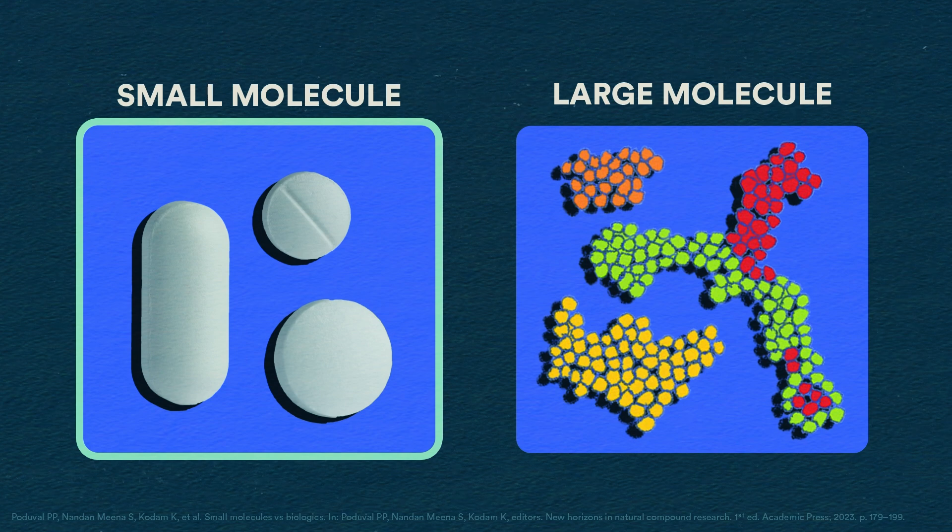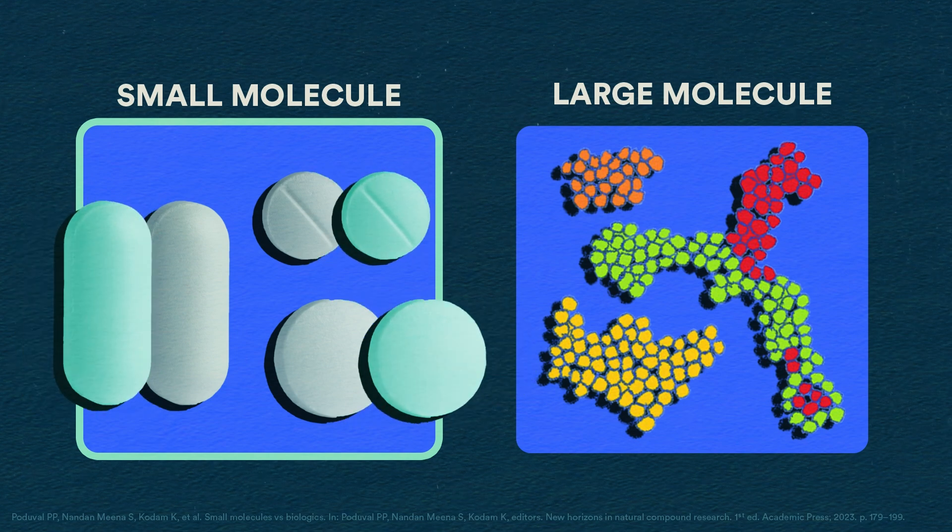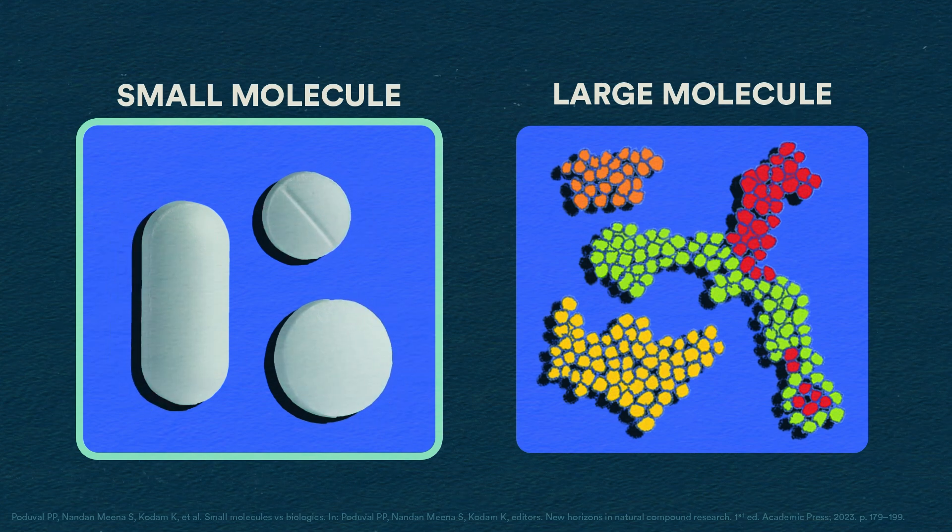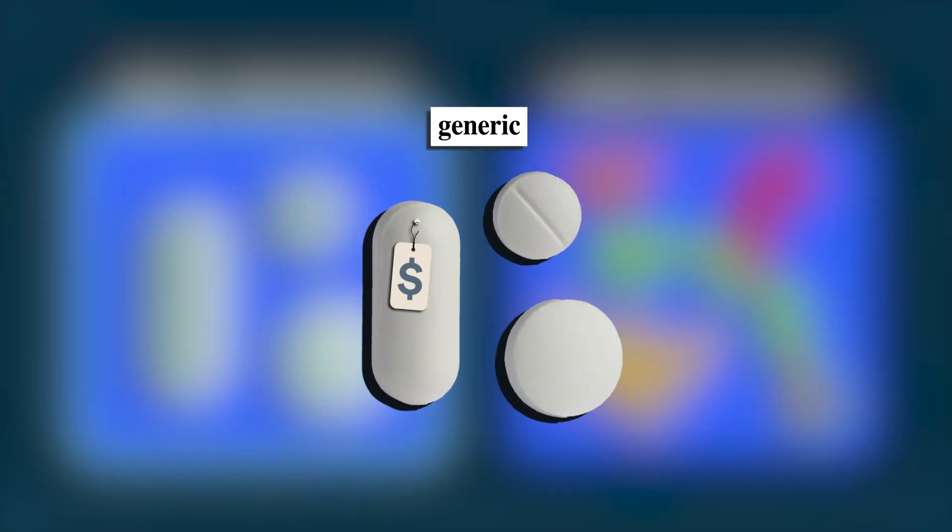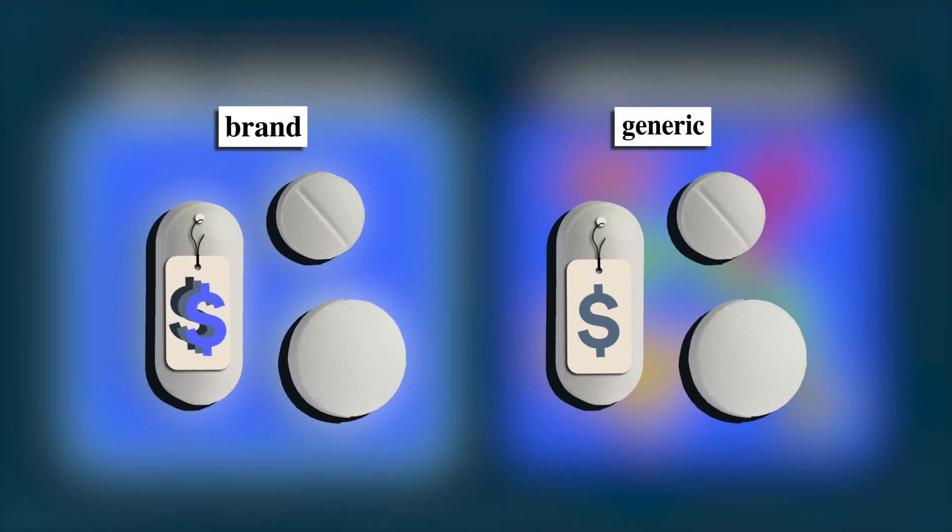Small molecule drugs are chemically derived, which means generic versions are exact chemical copies that can be produced and substituted for brand name versions. This means when you take a generic small molecule drug, you're getting the exact same medicine for less money.